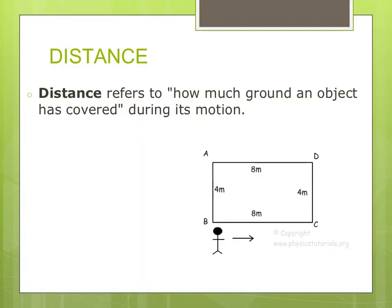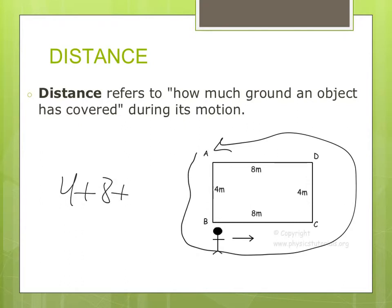Distance is something we'll refer to a lot and as you already know, it's how much ground you actually covered. So if you start at point A and went around in a circle, 4 plus 8 plus 4 plus 8 would give you 12 and 12, which gives you a total distance of 24 meters. It's just how far you went.